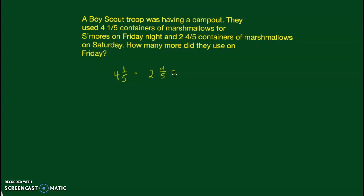Later on in the year we're going to use a different algorithm to solve this. Today I'm going to use a picture and a number line. To start, we're going to start with our biggest number, which is four and one-fifth.